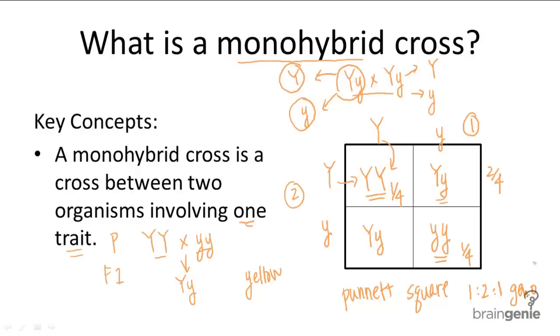We can also examine phenotype from this Punnett square. We know that big Y, big Y is yellow, and little y, little y is green, as well as big Y, little y is also yellow, because of the law of dominance, and yellow masks green.